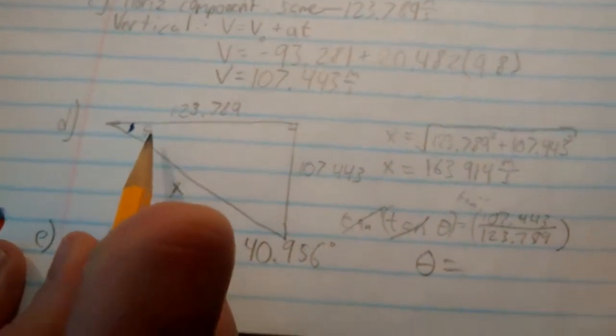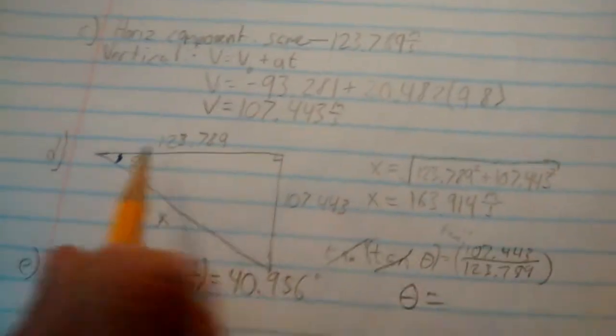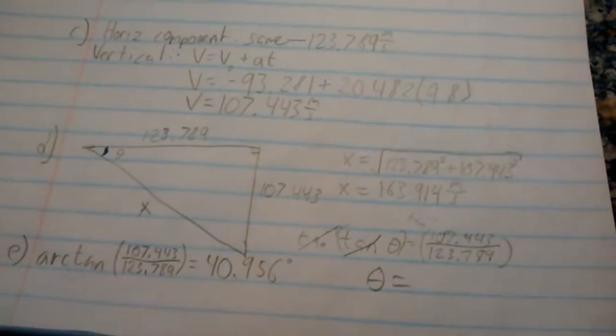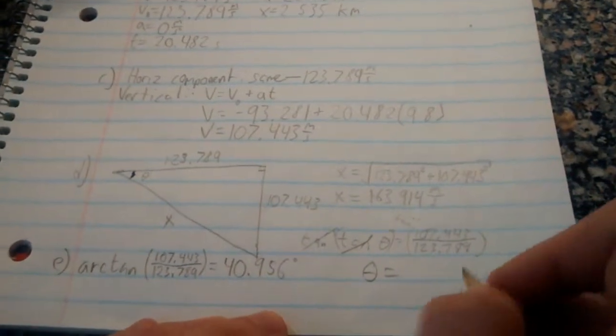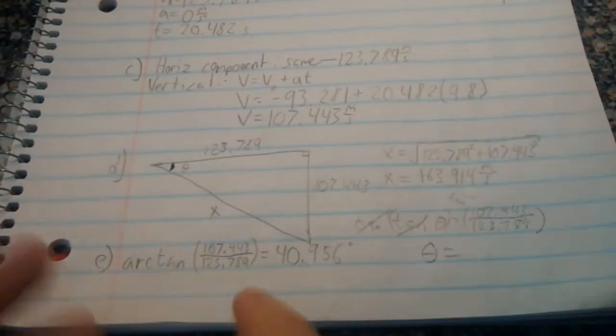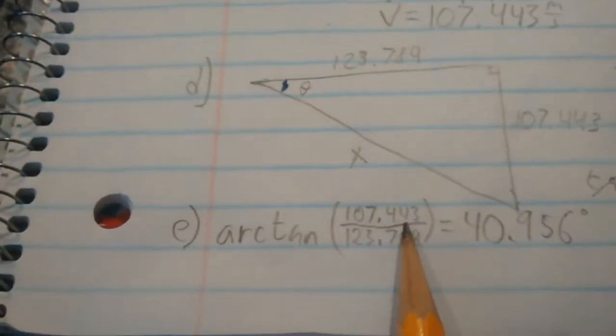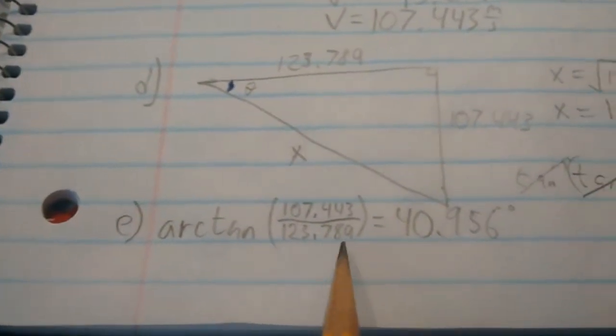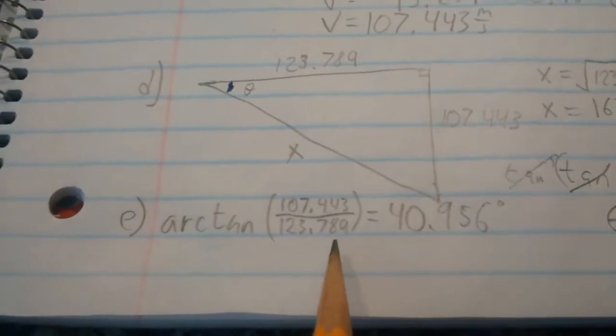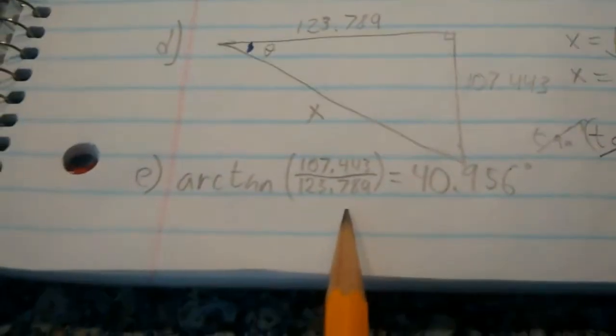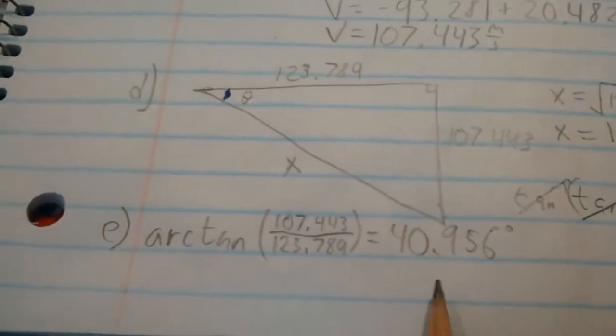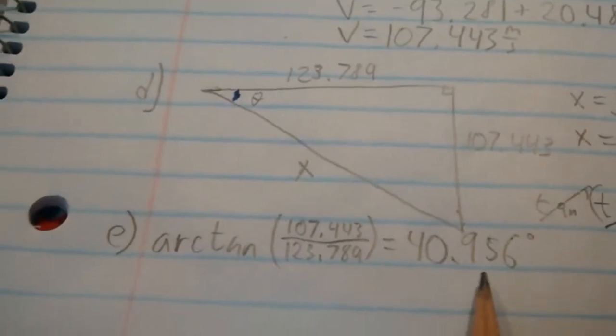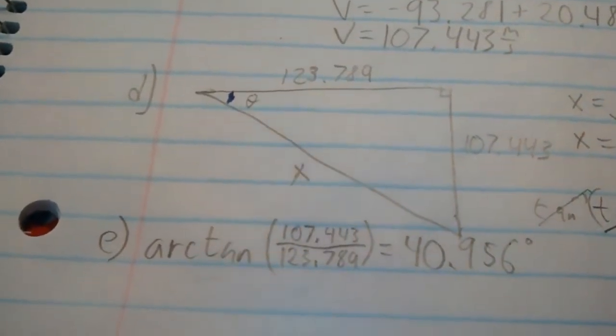Remember, this is the angle. We're looking for the angle with the horizontal. So down from the horizontal. And we know it's going to be negative because we go down one instead of up. Okay. So the theta, oh, I already solved for it here. Arc tangent of 107.443 over 123.789. If you're doing this by yourself, make sure your calculator is in degree mode, not in radian mode. I've made that mistake several times and I paid a heavy price for it. Anyway, the angle is 40.956 degrees. So that is our final answer.